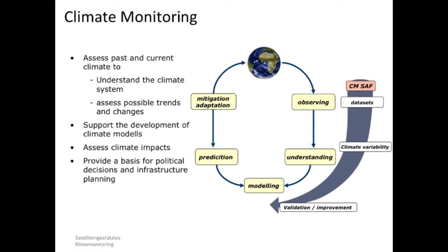Looking at this cycle: we observe not only clouds but also water vapor and radiation budget components. Once we have these observations, we create datasets, monitor climate variability, improve understanding, and validate climate models — which then leads to improved climate predictions and informs mitigation and adaptation options. This is a short summary of the CMSAF project.